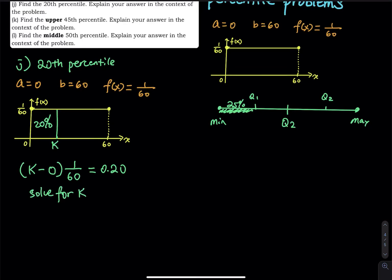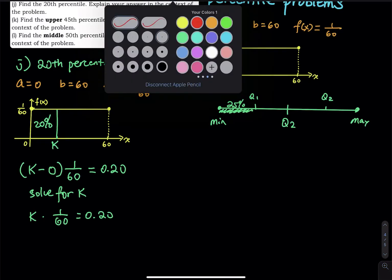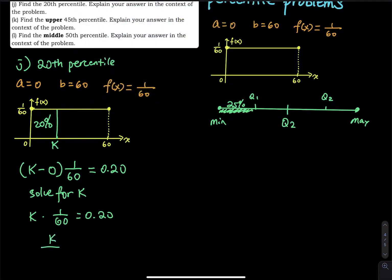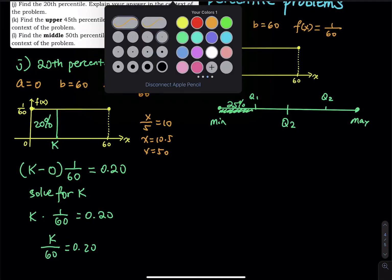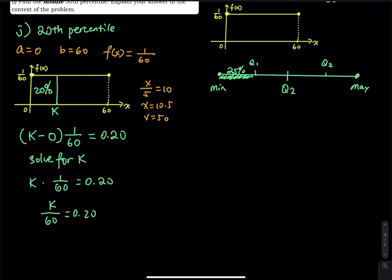To solve for K: K minus 0 is K, so K times 1/60 equals 0.2, giving K divided by 60 equals 0.2. Think of it like X divided by 5 equals 10 — you multiply both sides by the denominator to get X equals 50. Similarly, K equals 0.20 times 60, so K equals 12.